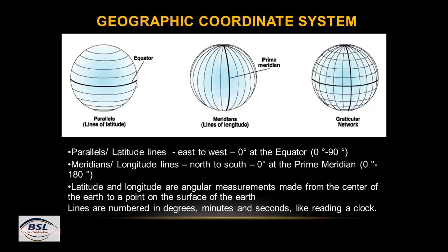The prime meridian is also called zero meridian. The lines to the right of the prime meridian are called east meridians, and the lines to the left of the prime meridian are called west meridians. In the third figure you can see the combination of parallel lines and meridian lines, which is called the graticule network, because the parallel lines are latitude and the lines connected to the north-south pole are longitude lines.